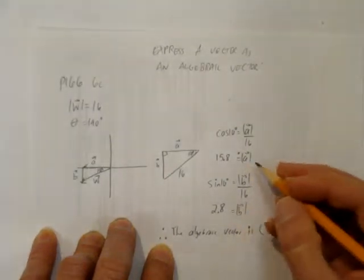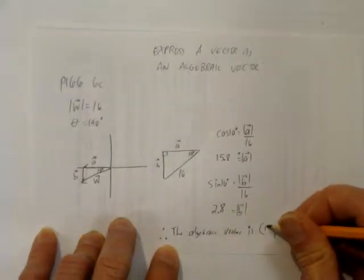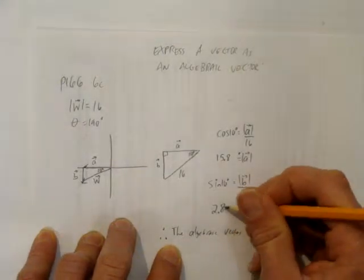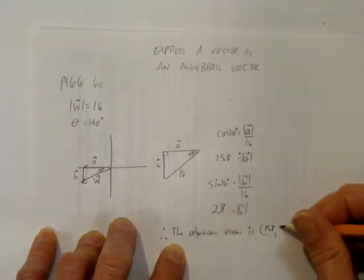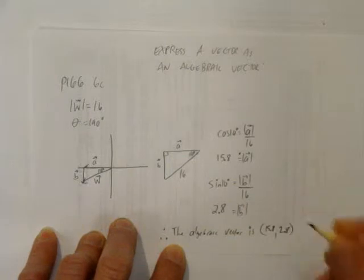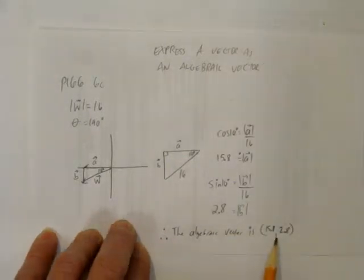The first number was this a vector, the x number, 15.8. And the second number was the y coordinate, 2.8. There's one last thing we have to be really careful of not to stop there.